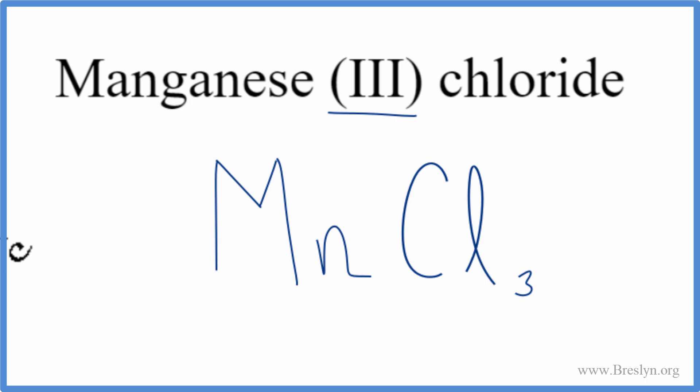We should check our work though, make sure we got it right. So for manganese, the Roman numeral 3 tells us we have an ionic charge of 3+. Chlorine here, we have the 1-. So we have 3 of the chlorines.